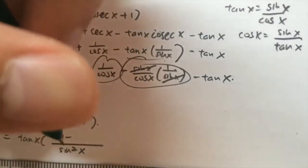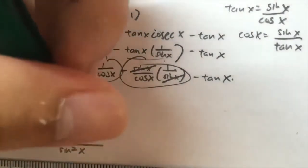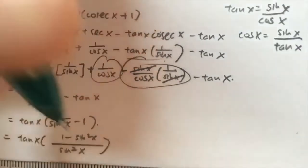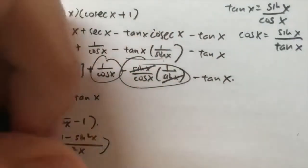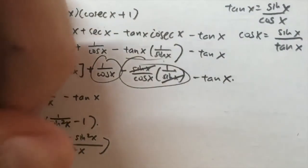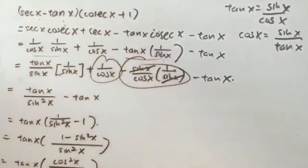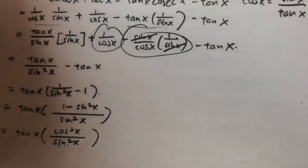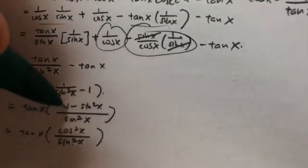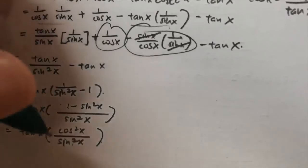So from here, I have sin²x and (1 minus sin²x). This simplifies to cos²x over sin²x. From here, I used the identity: cos²x + sin²x = 1, which means cos²x equals 1 minus sin²x.